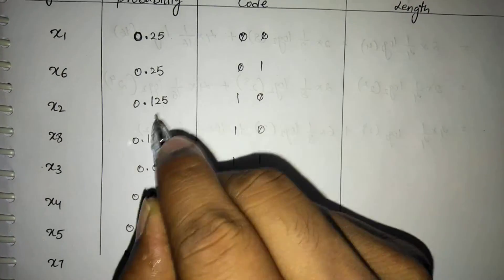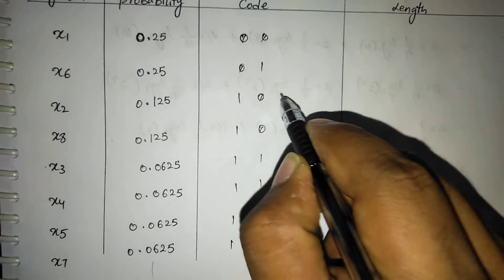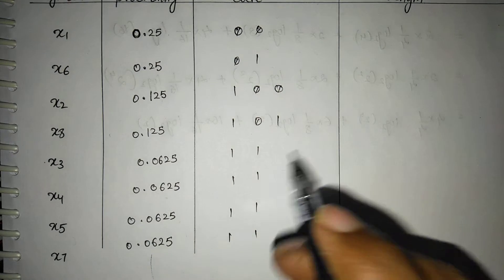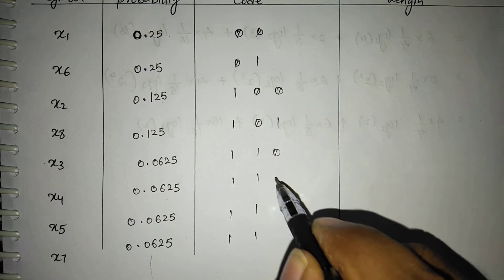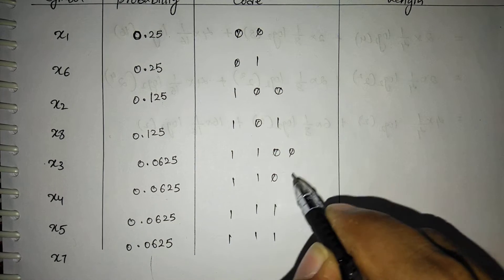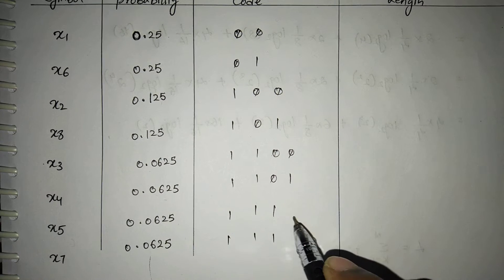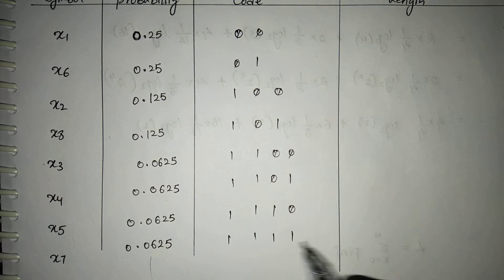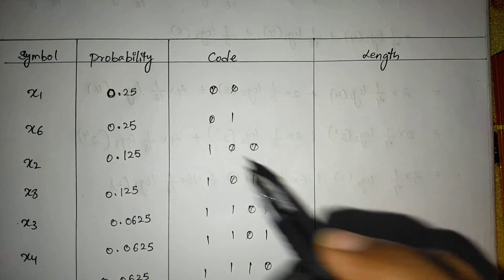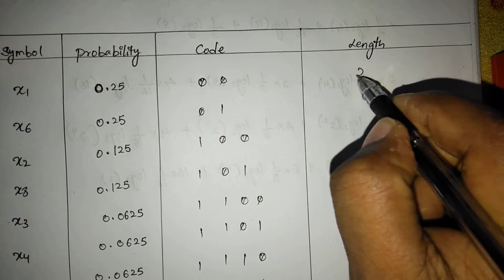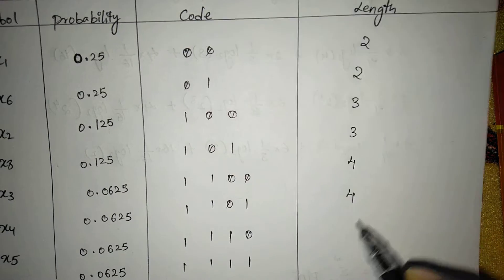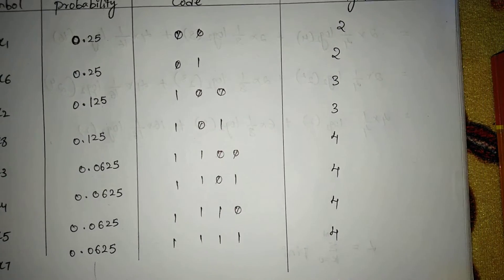Again, priority is given to the first element so assign 0 and 1. We further divide into equal probability sub-groups: assign 0 here and 1 here, giving top priority to the first. For the last two remaining probabilities we directly assign 0 and 1. Code length is simply the number of binary digits in each code — here we get 2, 2, 2, then 3, 3, and 4, 4, 4, 4.